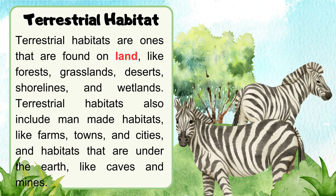Terrestrial habitats are ones that are found on land, like forests, grasslands, deserts, shorelines, and wetlands. Terrestrial habitats also include man-made habitats like farms, towns, and cities, and habitats that are under the earth, like caves and mines.